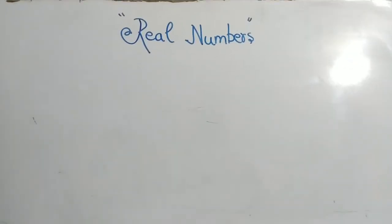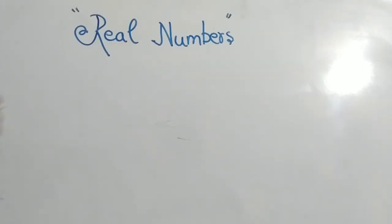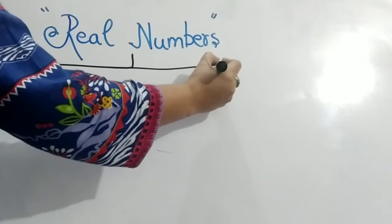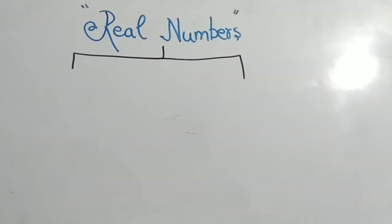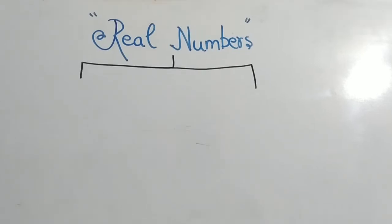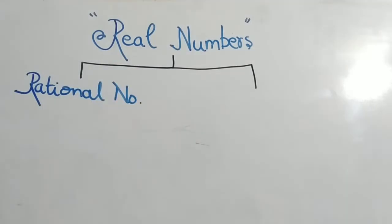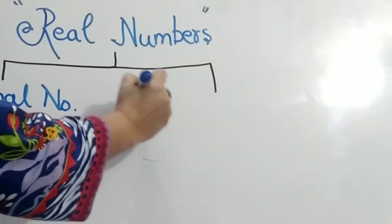Real numbers. Real numbers are basically two types of numbers. In real numbers, there are rational numbers and irrational numbers.